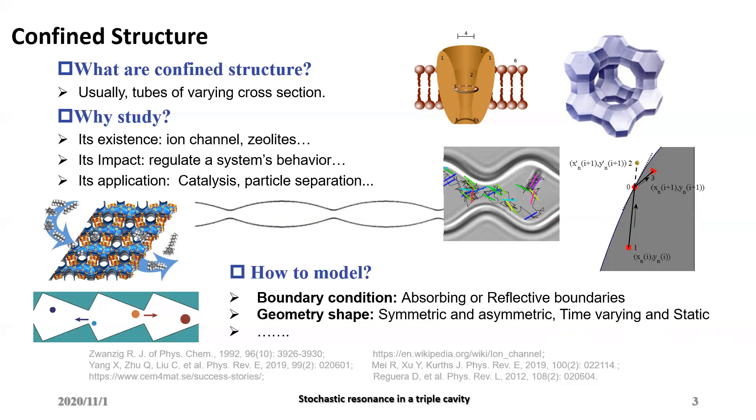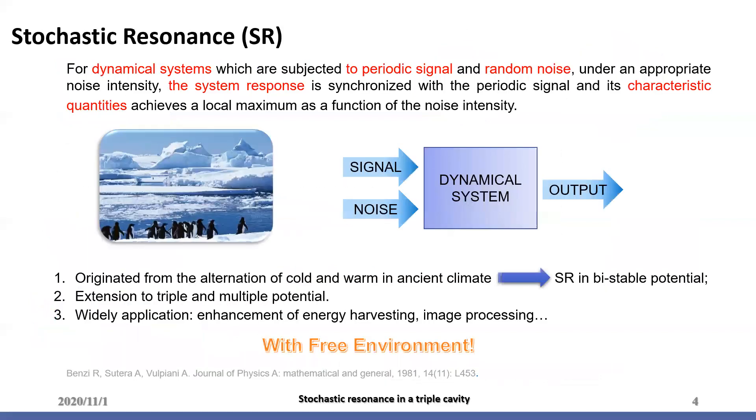Examples are zeolites as an excellent catalyst for converting gasoline to diesel. A tube with a variable diameter can achieve high purity particle separation. Thus, confined structures is an object of widespread concern. Many models are proposed to construct confinements from aspects like boundary condition and geometry shapes.